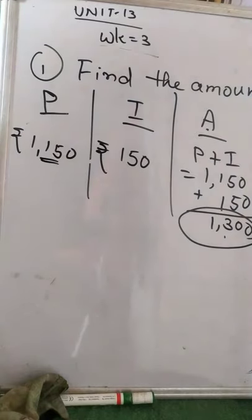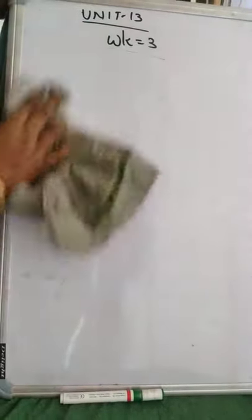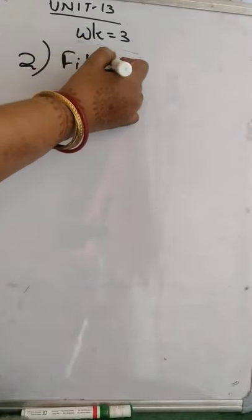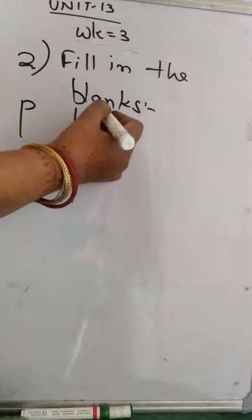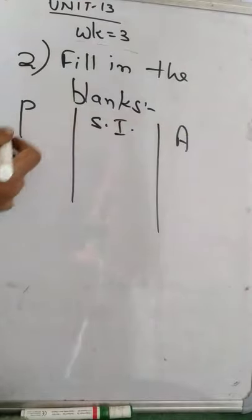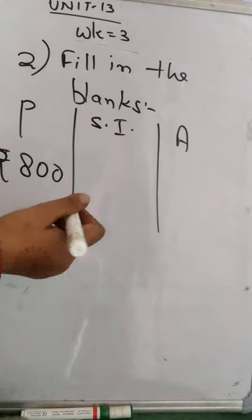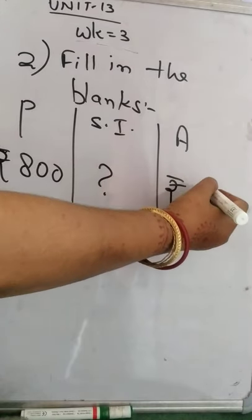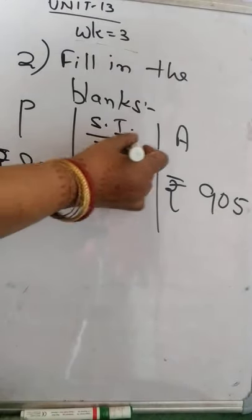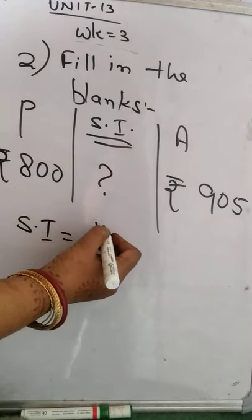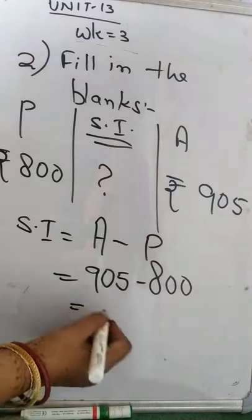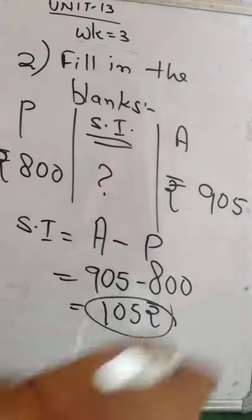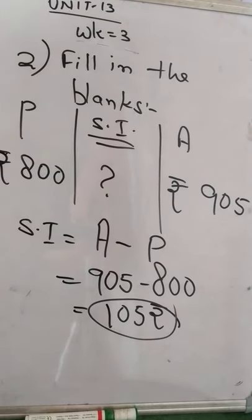Similarly you have to do Question Number 1. Now come to Question Number 2, which is fill in the blanks. The columns are principle, simple interest, and amount. The first one has principle rupees 800 and amount rupees 905. To find simple interest: simple interest equals amount minus principle, that is 905 minus 800, which gives rupees 105.